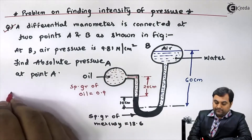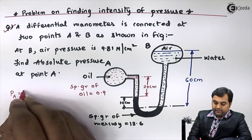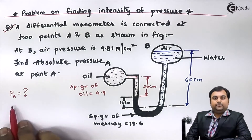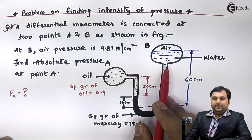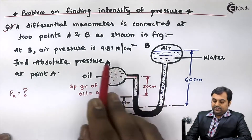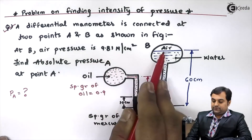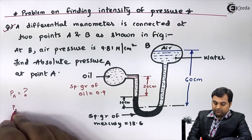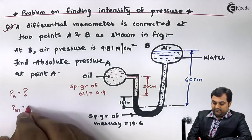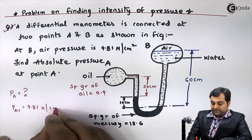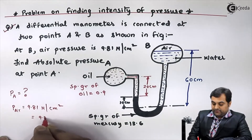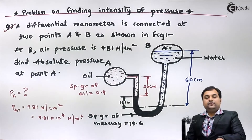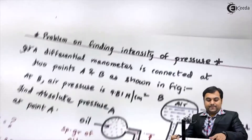The question is to find the absolute pressure at point A — meaning we have to find the pressure of oil. To calculate the pressure at point A, we need to know the pressure at point B. The air pressure is given, so the pressure of air on the right limb is: P_air = 9.81 Newton per centimeter square, or equivalently 9.81 × 10⁴ Newton per meter square.